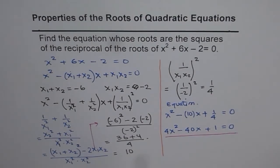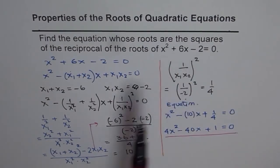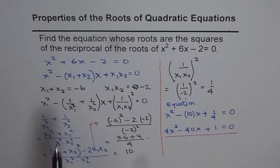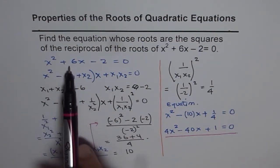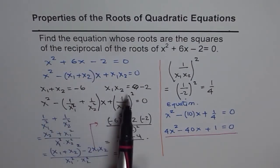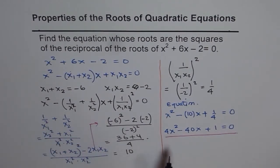I hope you appreciate the method. Write down the equation and find the related equation with its roots. We get the sum and product of roots from the original equation — sum is -6 and product is -2. From there we find the sum and product of the new equation and then get our final equation. I hope that helps. Thank you.